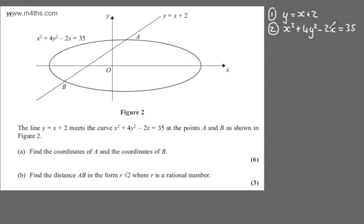A couple of different choices here. I'm simply going to substitute equation 1 into equation 2. So 1 into 2. If I do that, I'm going to end up now with x squared plus 4 lots of y squared. So that's going to be x plus 2 all squared minus 2x equals 35.